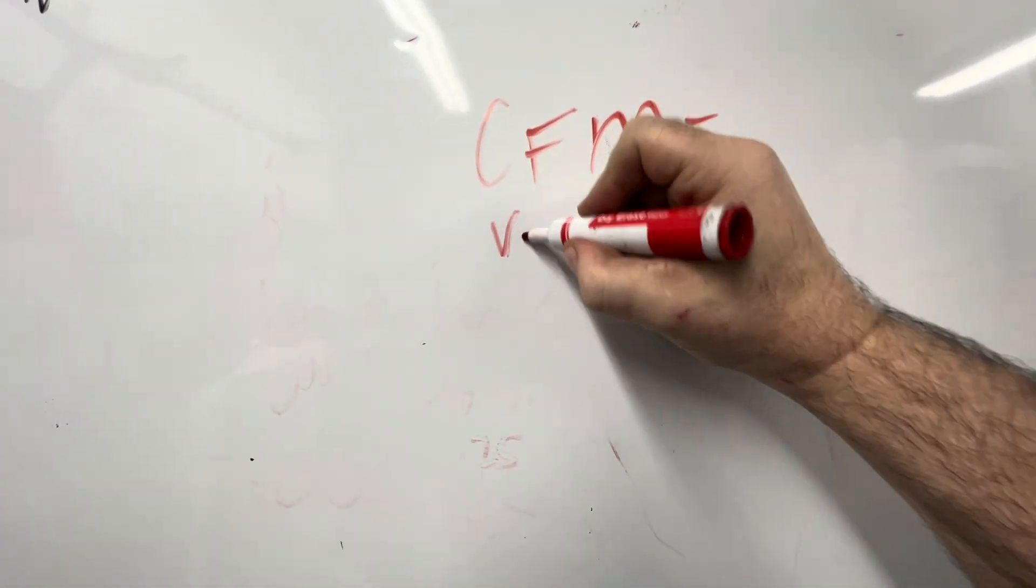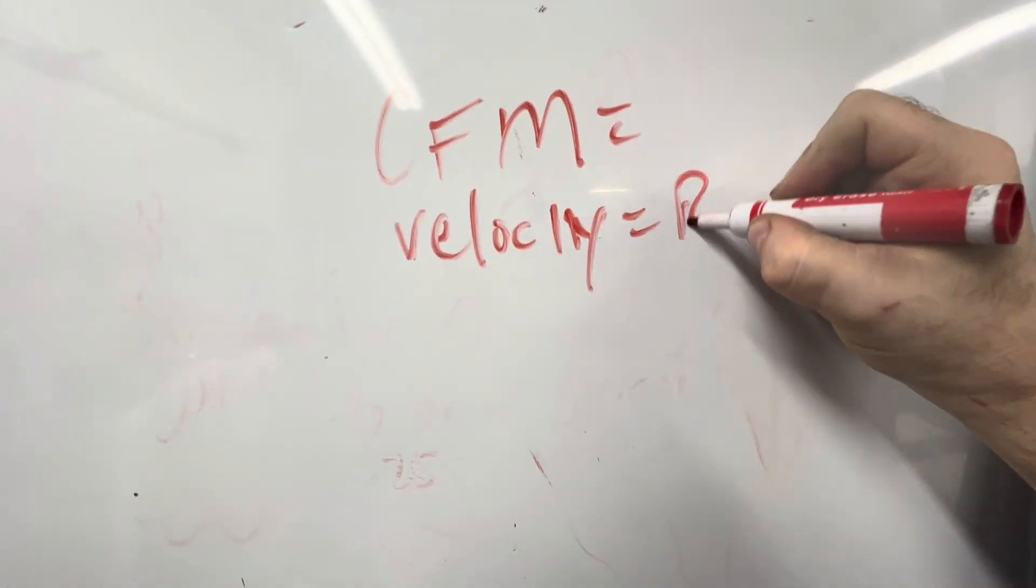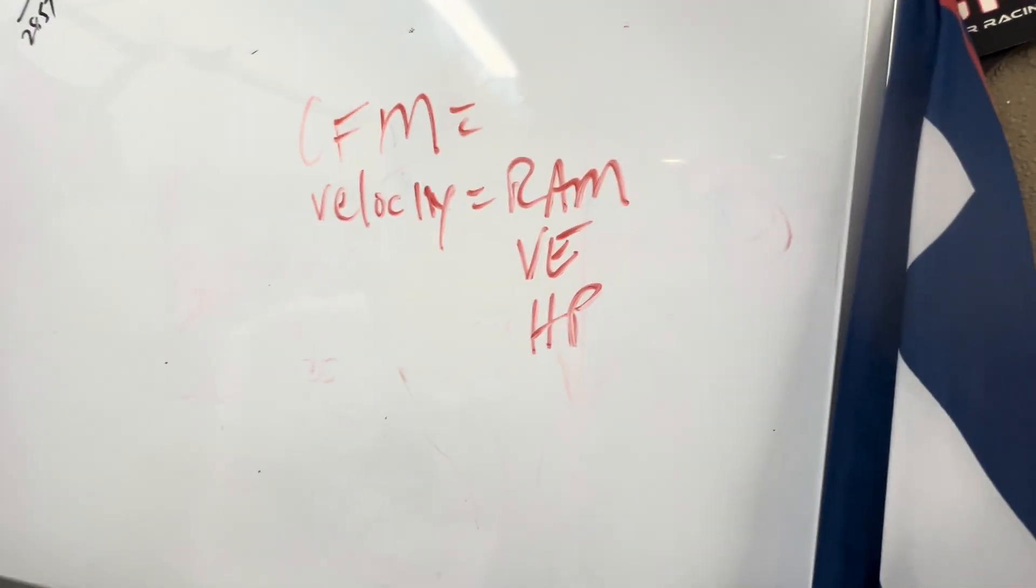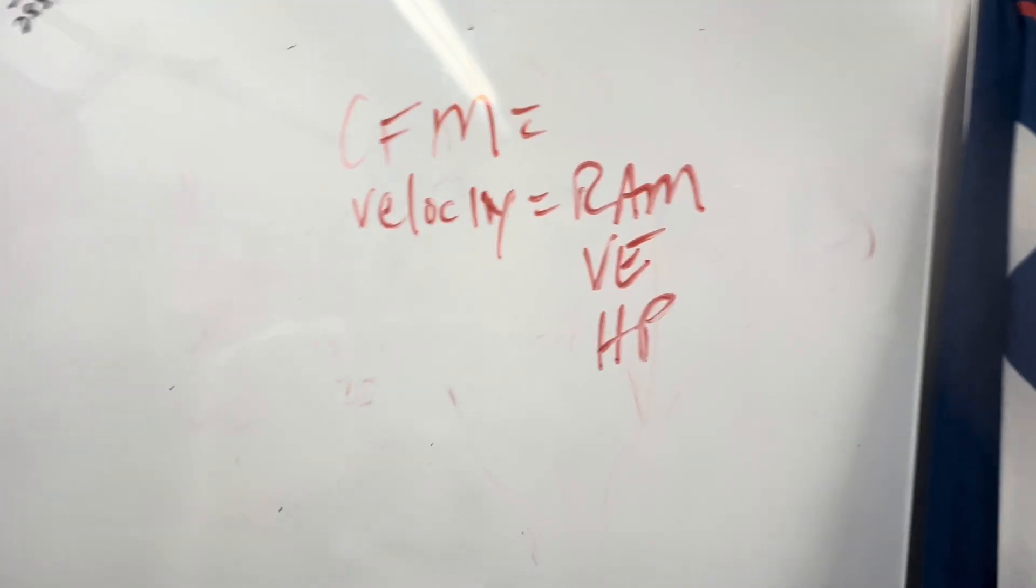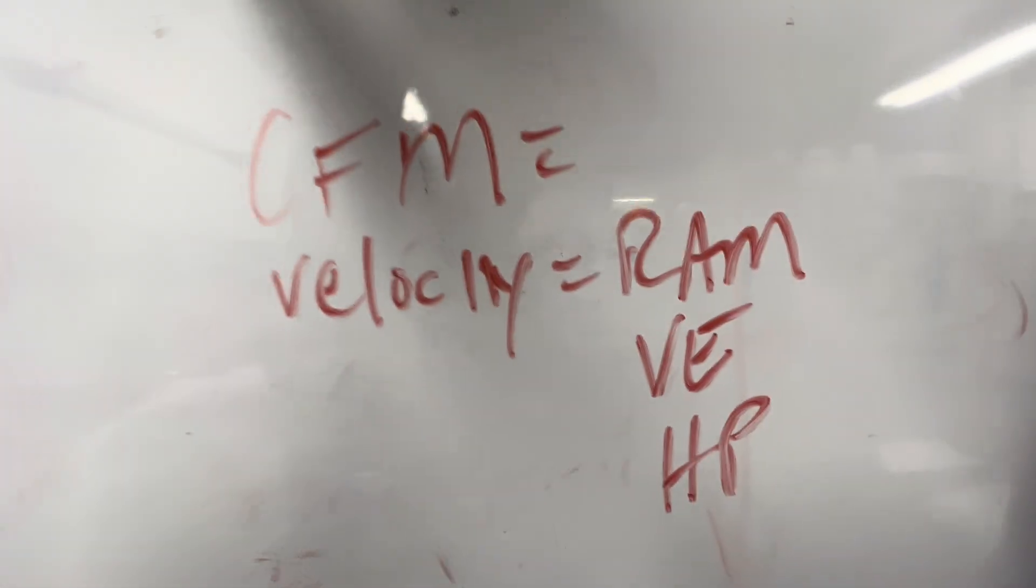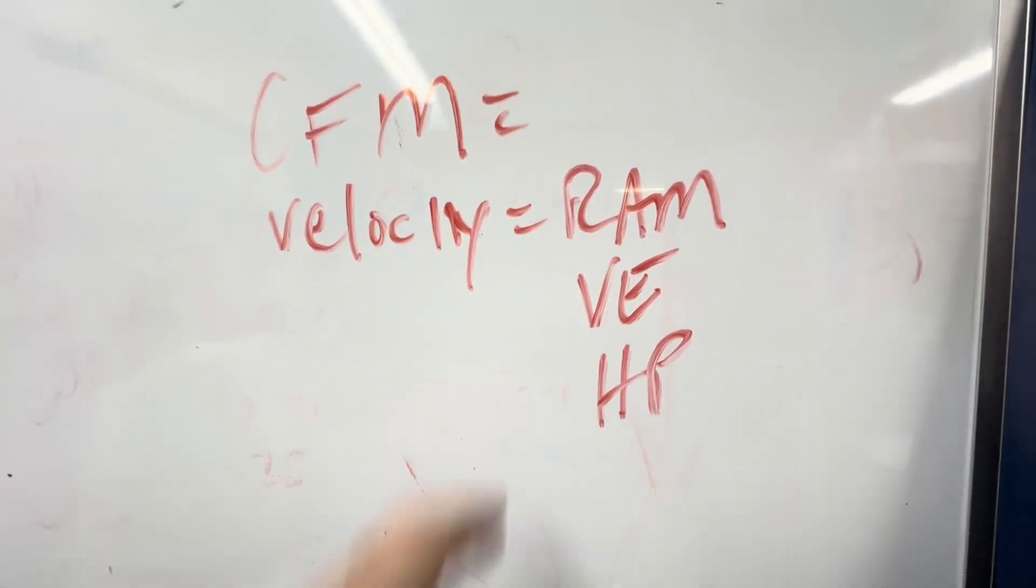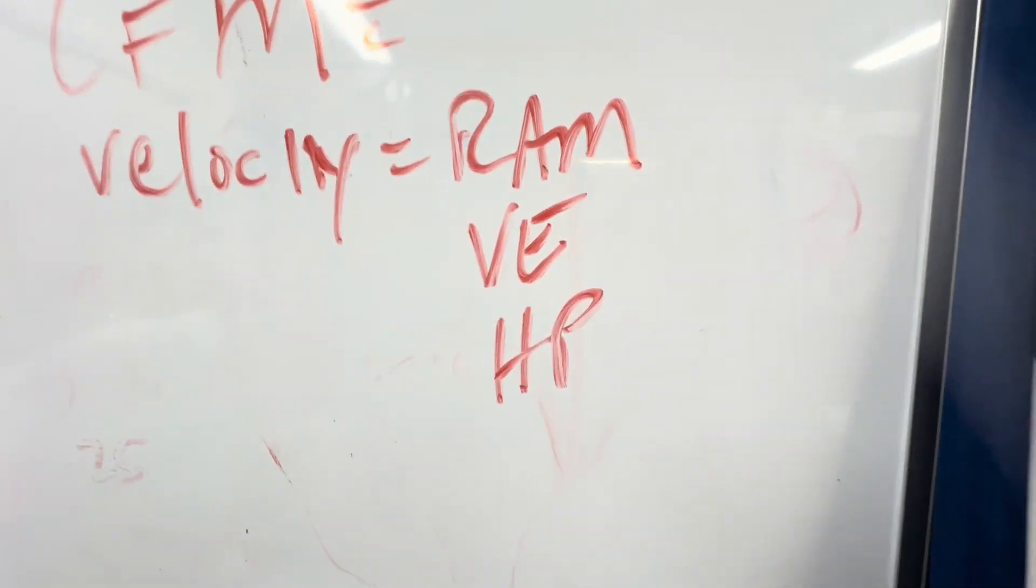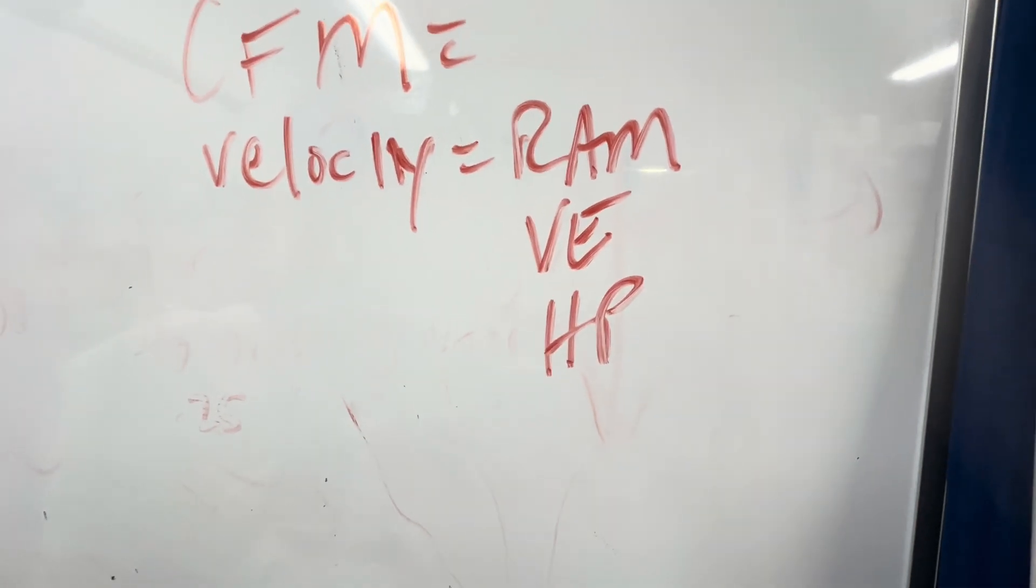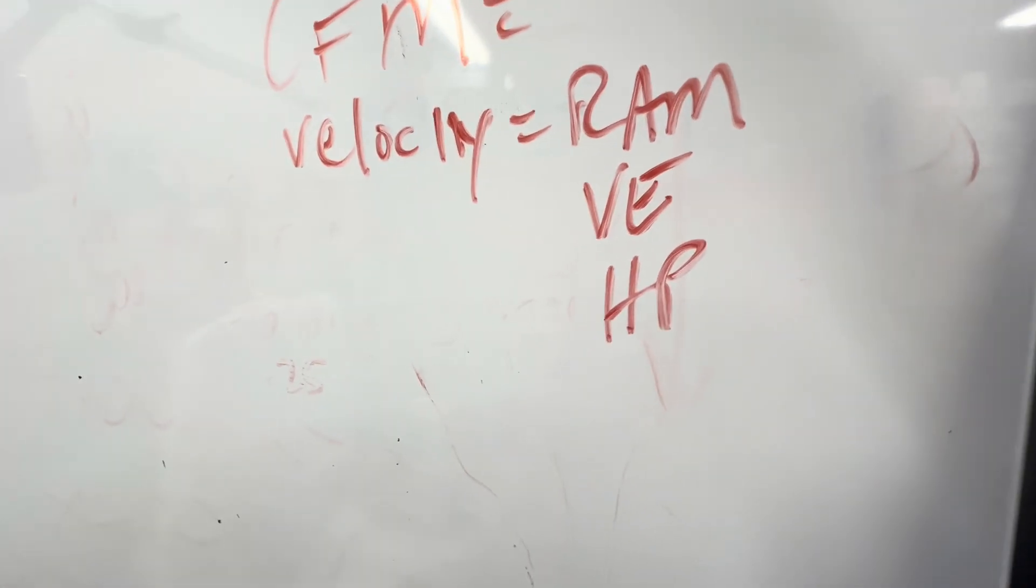One more thing. And I'll wrap this up. CFM carries your power band. Velocity equals RAM, which is VE, which is horsepower. That's why my opinion, velocity, velocity, velocity, shape, shape, shape. This number right here carries everything. This number right here, right here is RAM, which is filling the cylinder, which depending on your camshaft and how you fill it equals, I've seen plenty of times more than a hundred percent VE. So there's another good point.